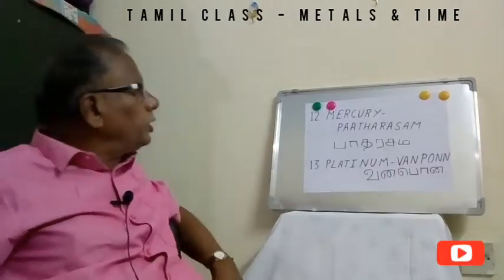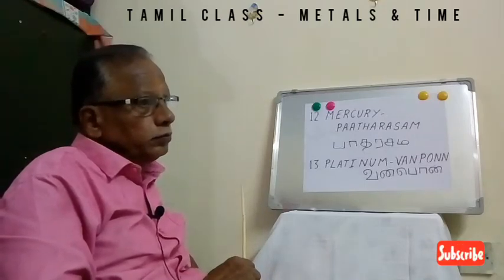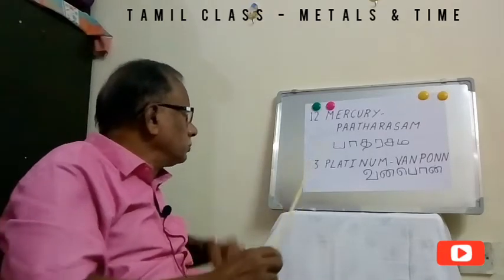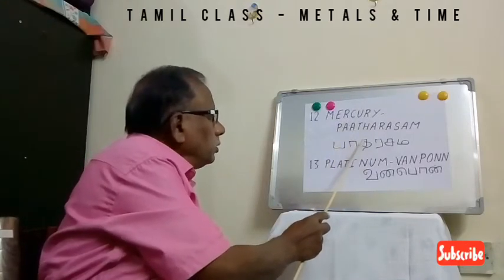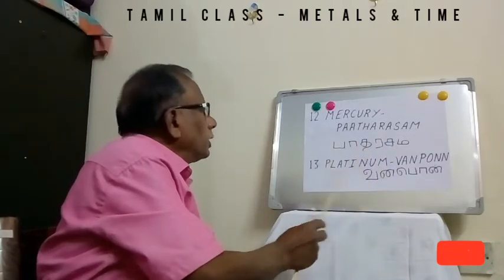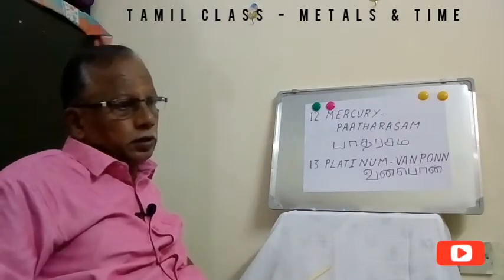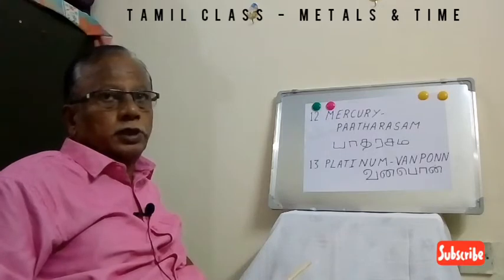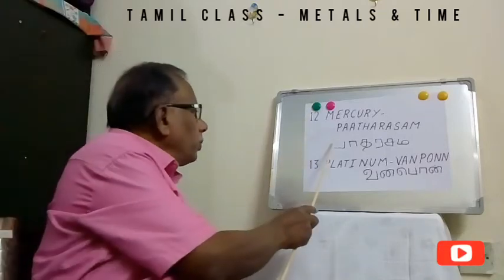The twelfth one is Mercury. Mercury belongs to the Venus planet — it represents a Venus state. In Tamil it is called Padarasam — P-A-D-A-R-A-S-A-M. Mercury is normally used in a thermometer because it can remain in both solid and liquid states. It is a special type of metal used to show temperature.